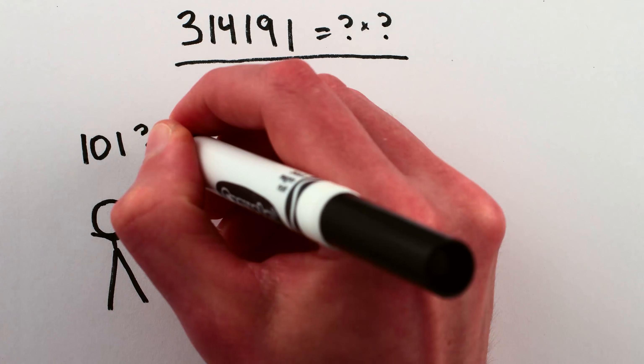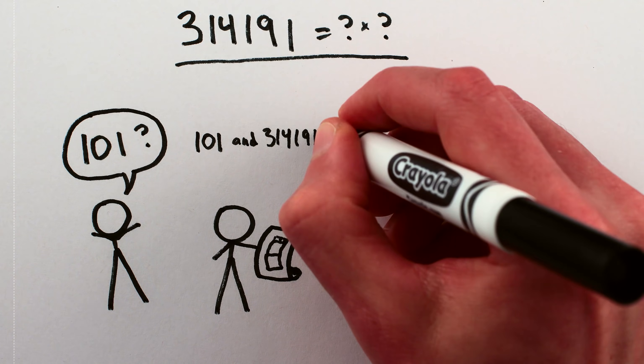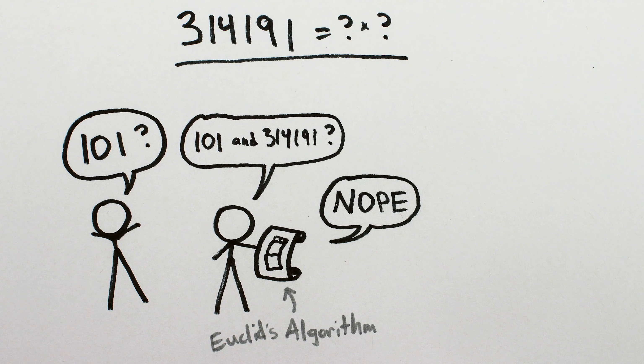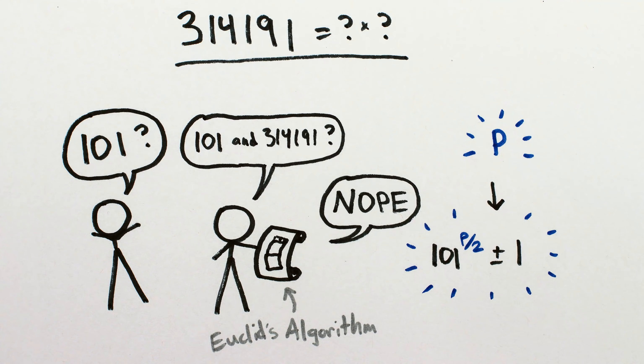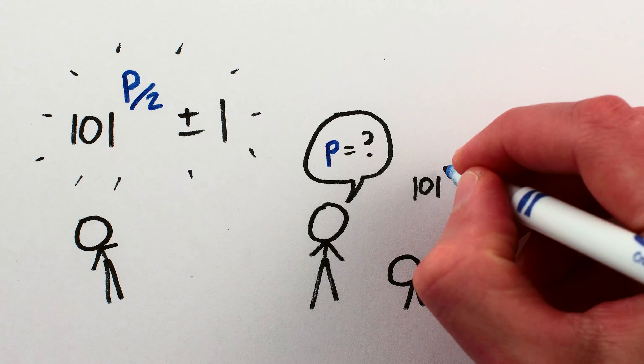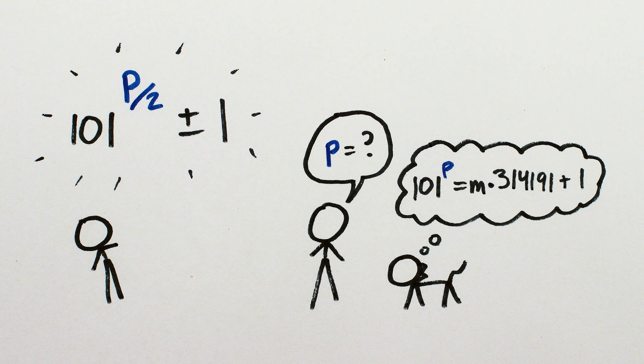So first we make some random crappy guess, like, I dunno, 101? Then we check to see if 101 shares a factor with 314191, and it doesn't. So our goal is to find the special power p for which 101 to the p over 2 plus or minus 1 is a better guess for a number that shares factors with 314191. To do this, we need to find the number p such that 101 to the p is one more than a multiple of 314191.